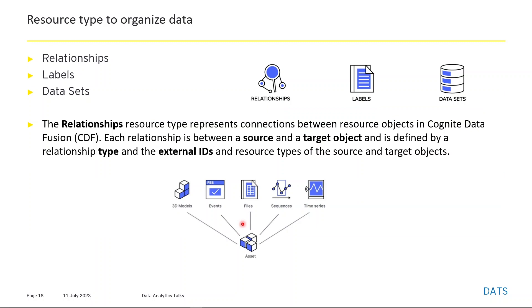How you organize data according to resource type is important. We have relationships, labels, and data sets to connect resource types. A relationship resource type represents a connection between resource objects in Cognite Data Fusion. Each relationship between a source and a target object is identified by a relationship type, external IDs, and resource types of the source and target objects. An asset can have a 3D model, events, files, sequences, and time series.